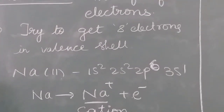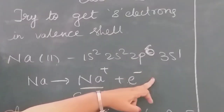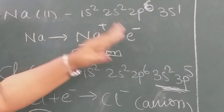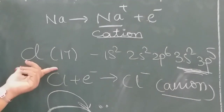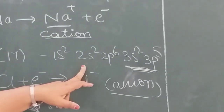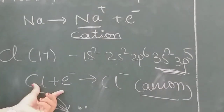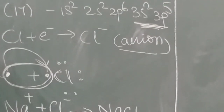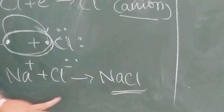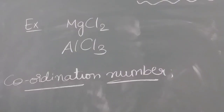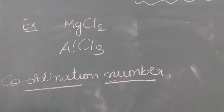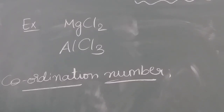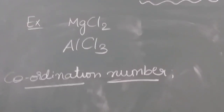Ionic bond forms due to transfer of electrons. Sodium has one extra electron, so it gives that electron and becomes a stable cation. Chlorine needs one electron for the octet, so it takes that electron and becomes an anion. Na+ and Cl− combine to form NaCl. Other examples of ionic bonds include MgCl2 (magnesium chloride) and AlCl3 (aluminium chloride).